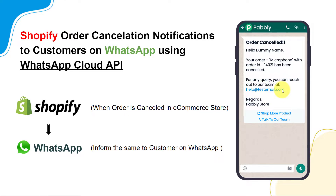The problem here is Shopify and WhatsApp do not have any direct connection. That is why, in order to build a connection between these two applications, I am going to use an integration and automation software, Pabbly Connect, with the help of which we are going to set this automation. Just watch this video till the end and you will also be able to create this automation for your e-commerce store.